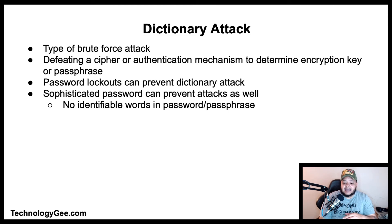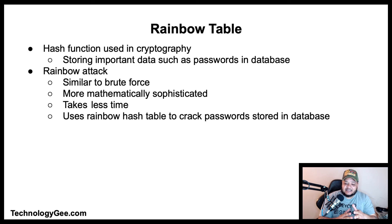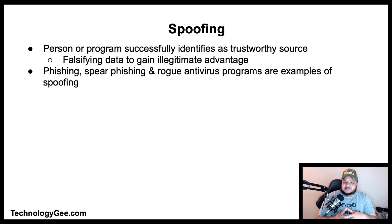Next we have a rainbow table. A rainbow table is a hash function used in cryptography for storing important data such as passwords in a database. A rainbow table attack is similar to a brute force attack except it is more mathematically sophisticated and takes less time. This is a type of hacking wherein the perpetrator tries to use a rainbow hash table to crack the password stored in the database.